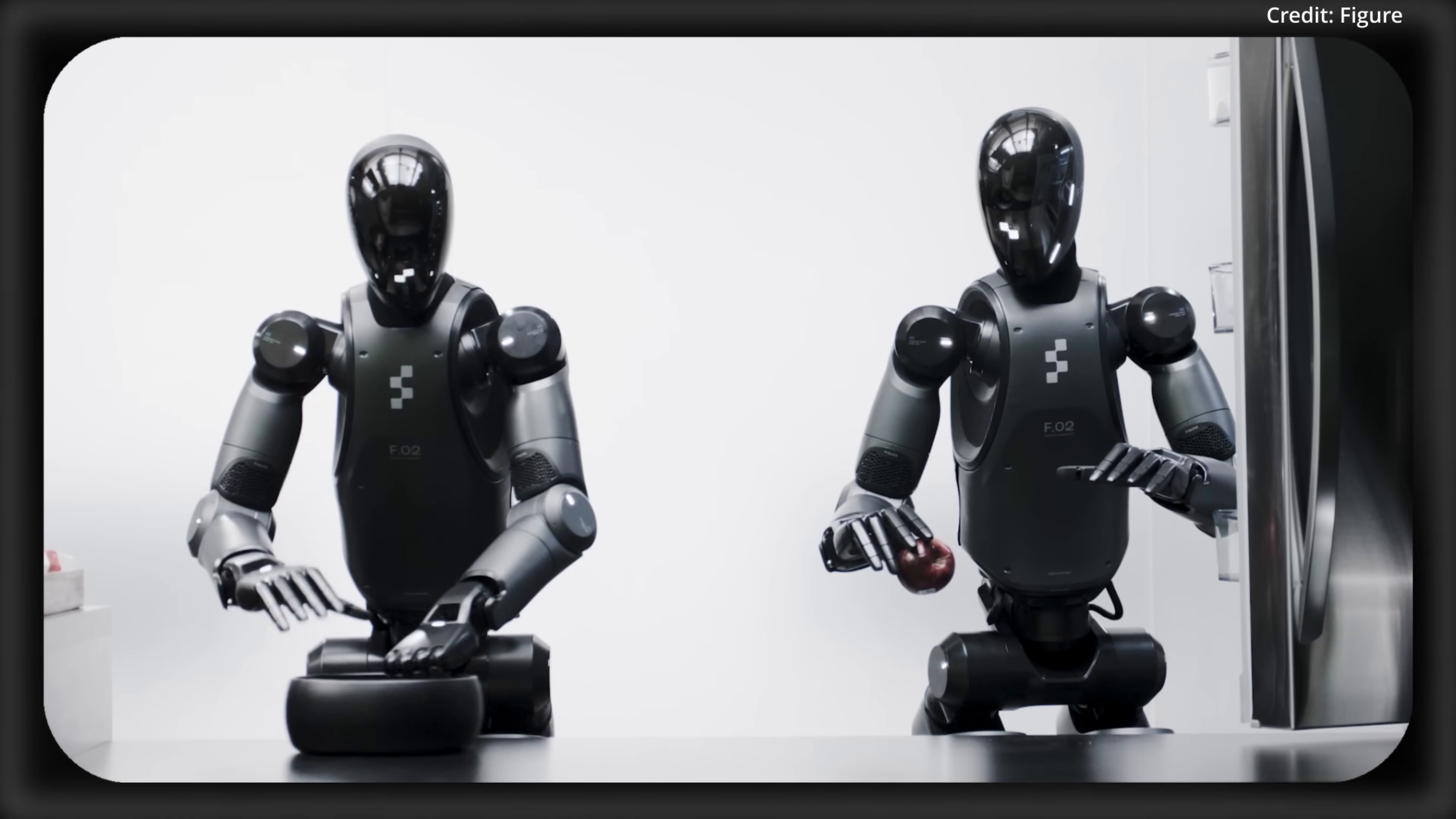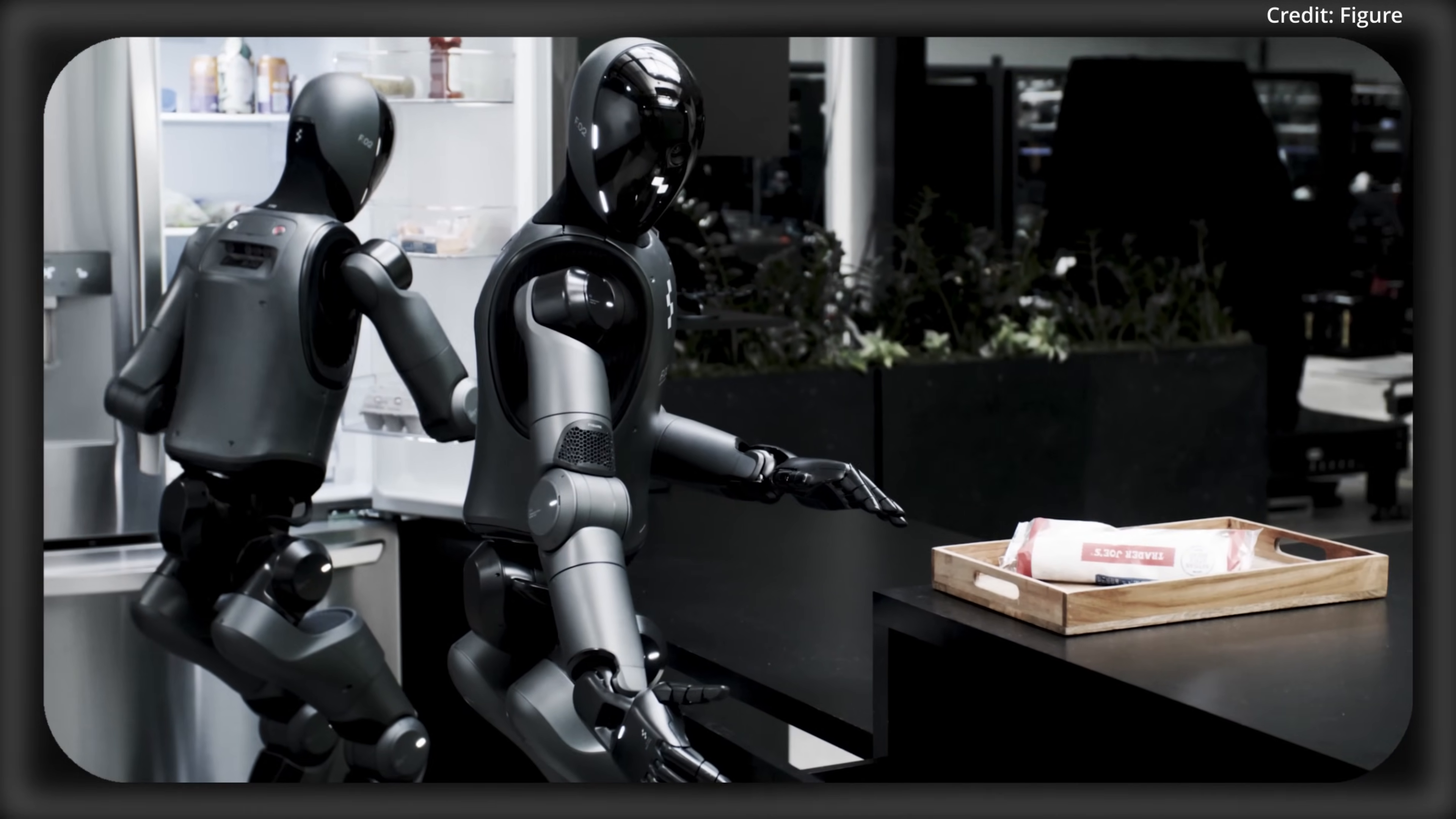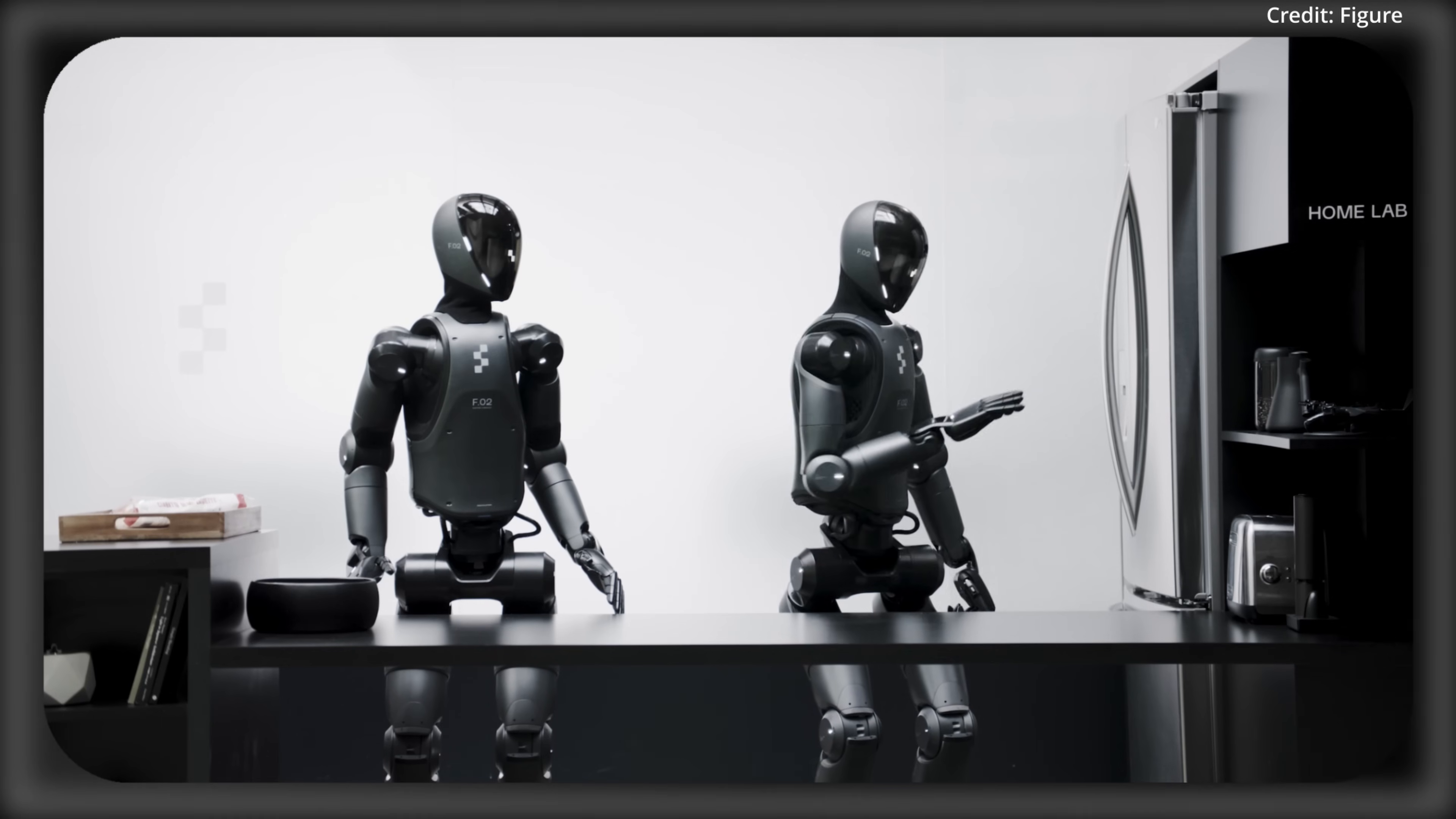Moving the head or torso alters reach and sight lines, a feedback loop that's tripped up past systems. Yet Helix thrives, with video demos showing a Figure robot tracking its hands with its head, adjusting its torso, and grasping objects delicately, all in sync. This whole-body coordination, once a pipe dream for high-dimensional tasks, finally equips Helix to tackle intricate jobs like arranging a table or sorting laundry with a human-like touch.